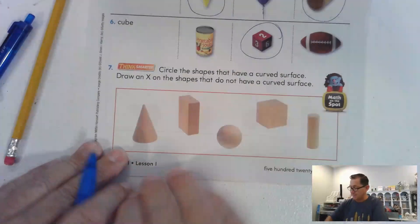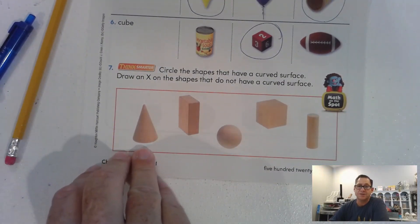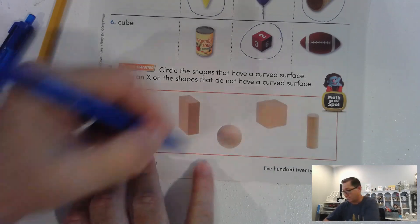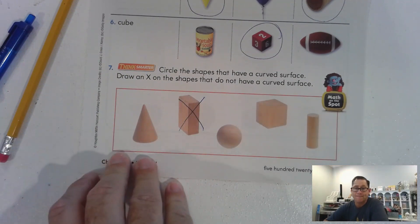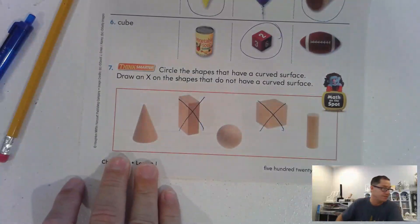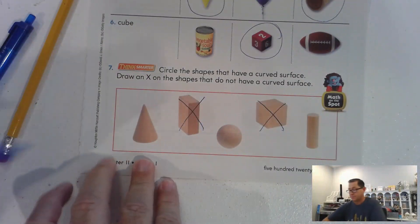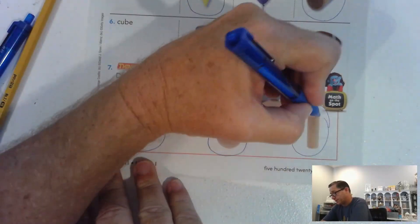All right. Circle the shapes that have a curved surface. Draw an X on the shapes that do not have a curved surface. Well, that doesn't have a curved surface. This does not have a curved surface. But the remaining three do have curved surfaces.